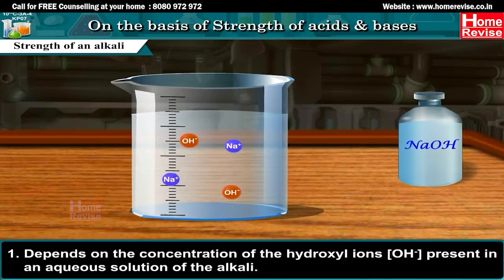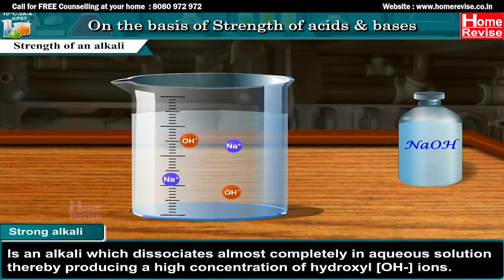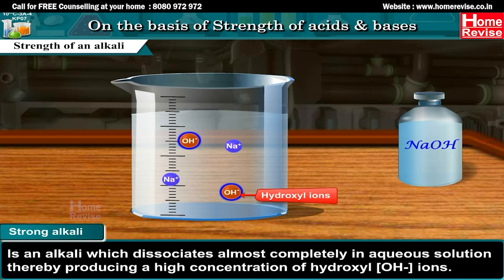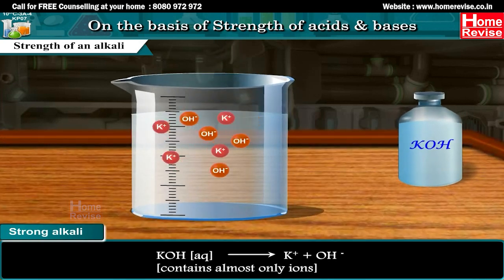The strength of an alkali depends on the concentration of hydroxyl ions OH- present in an aqueous solution of the alkali. A strong alkali is one which dissociates almost completely in aqueous solution, producing a high concentration of OH- ions. NaOH(aq) reversibly gives Na+ plus OH-. KOH(aq) reversibly gives K+ plus OH-. Contains almost only ions.